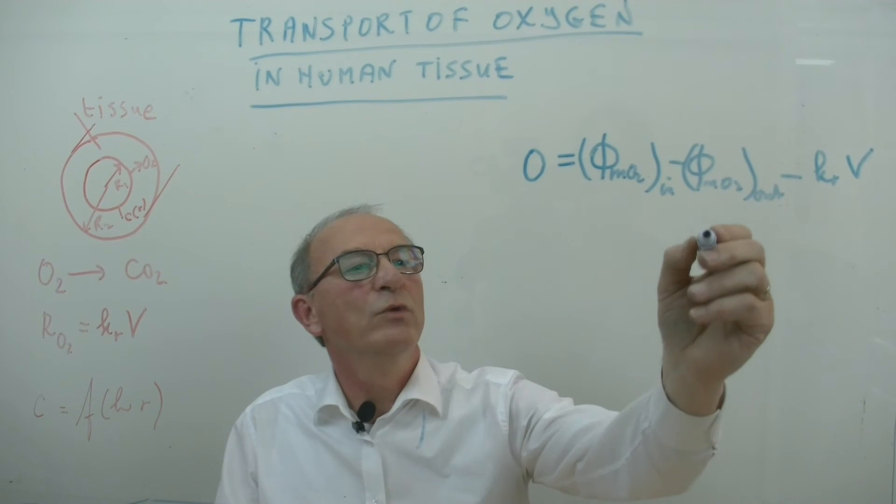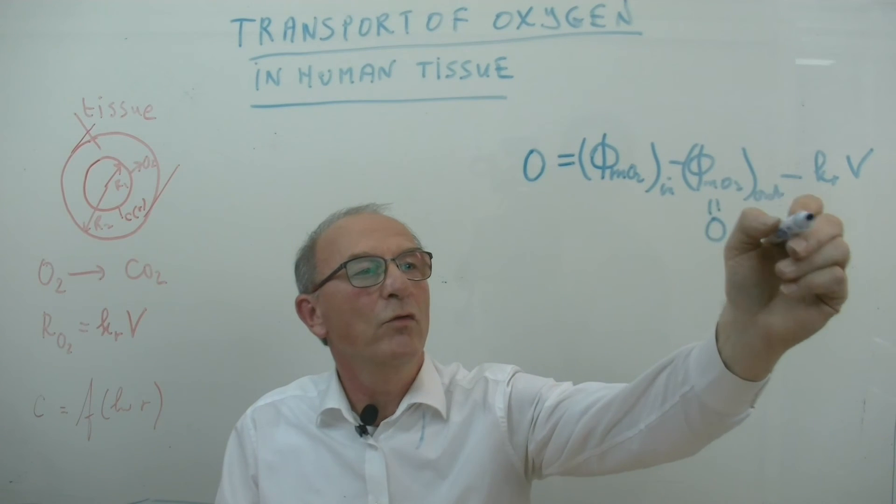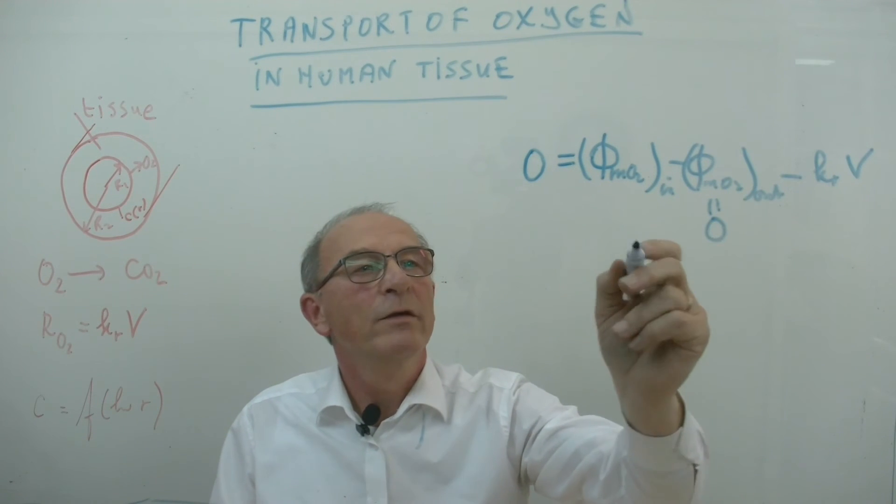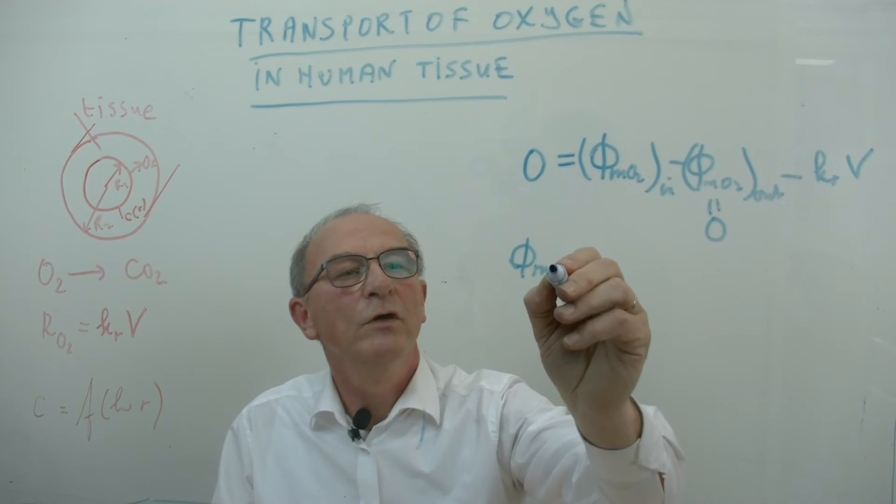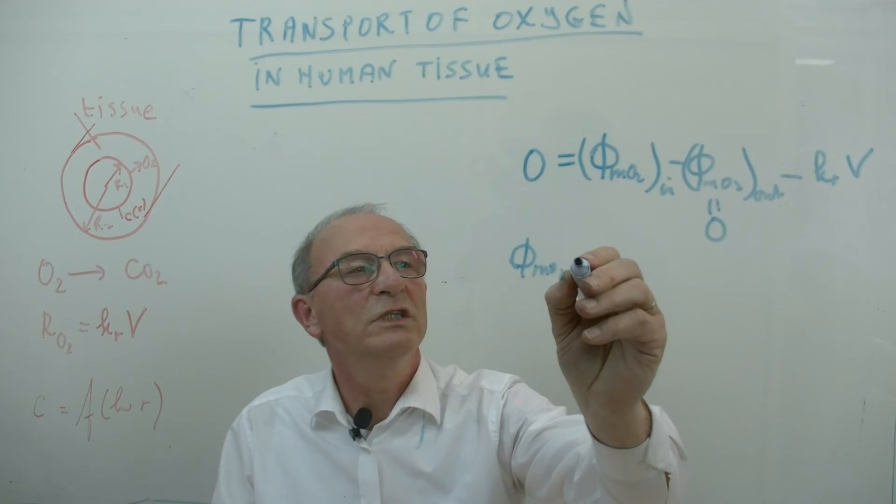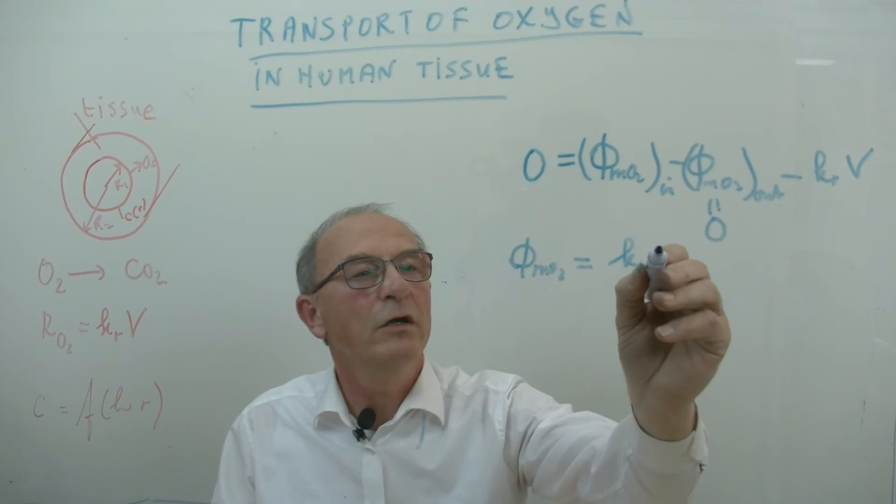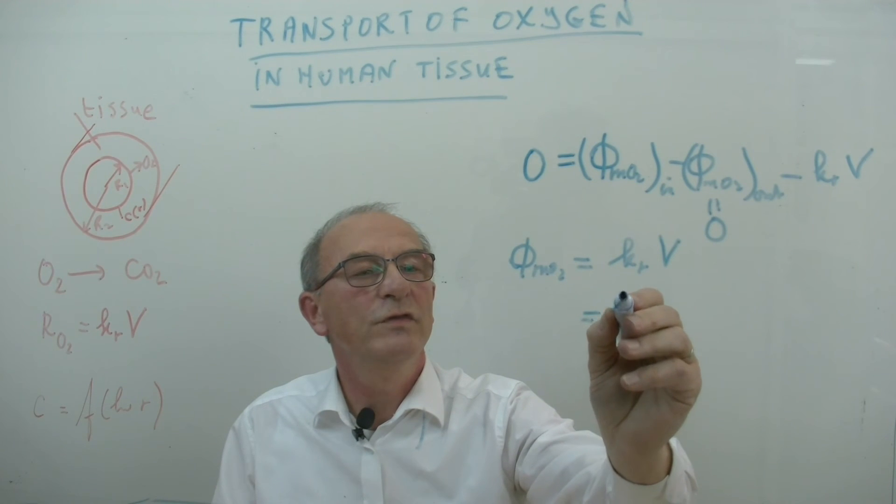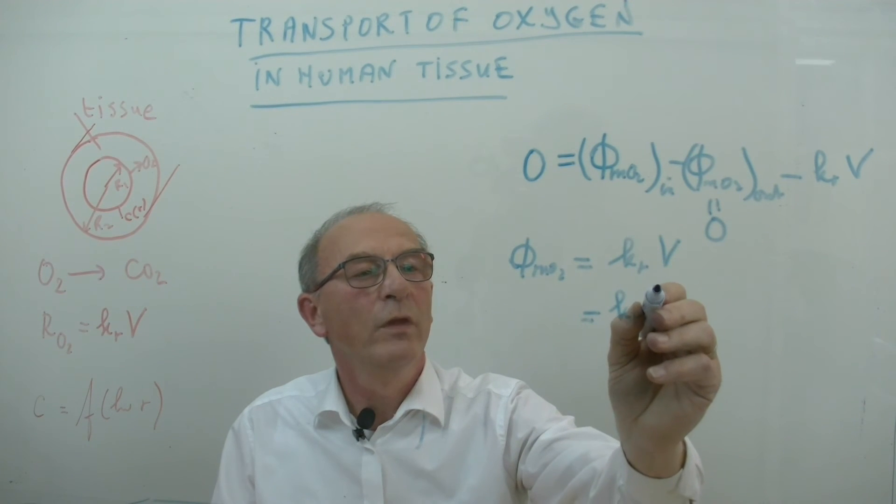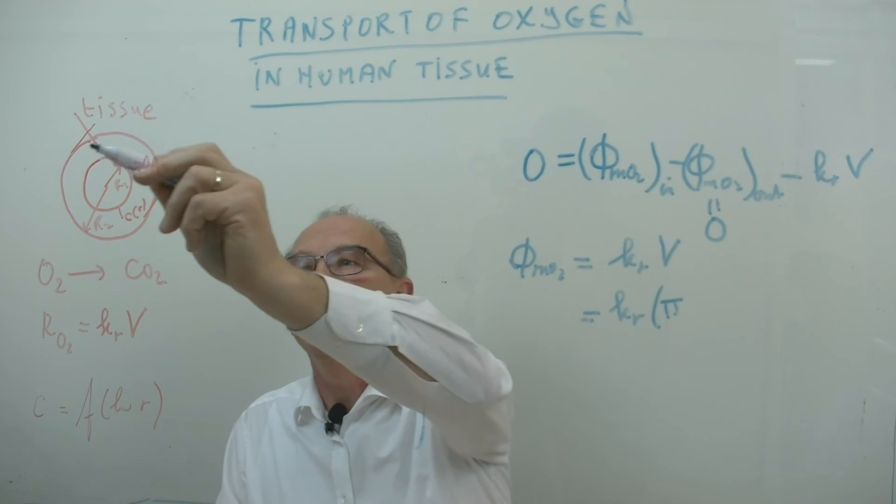You now easily see there is no oxygen going out because everything is reacted. So in this case we get that the mass flow rate of oxygen is equal to the reaction constant Kr multiplied by the volume. If we substitute the values for the volume, then we get the outer surface area of the cylinder.